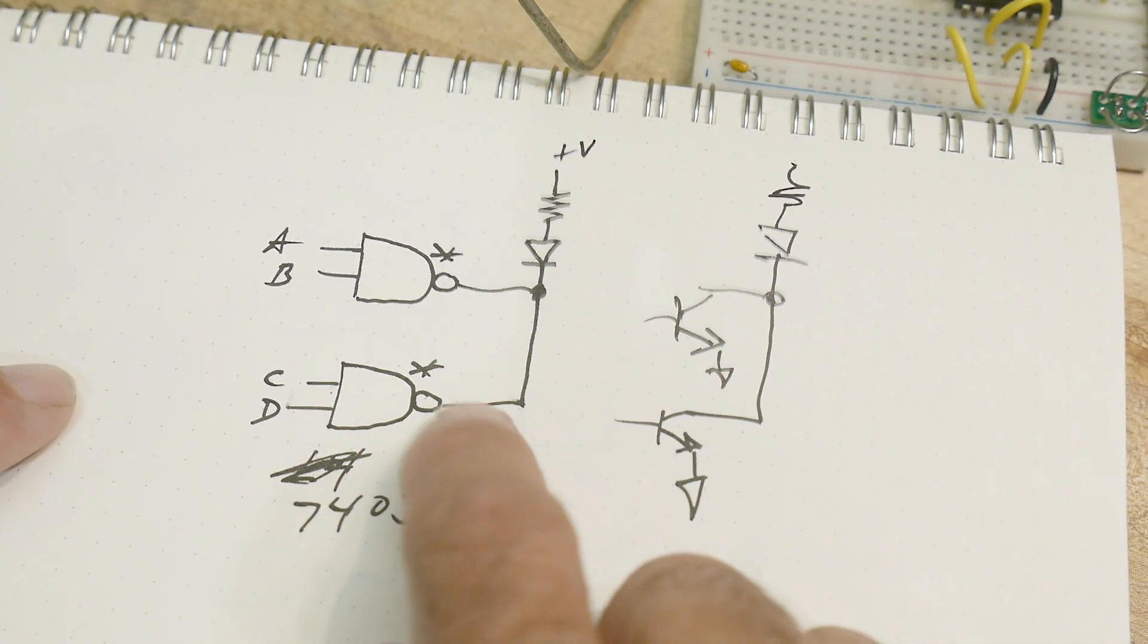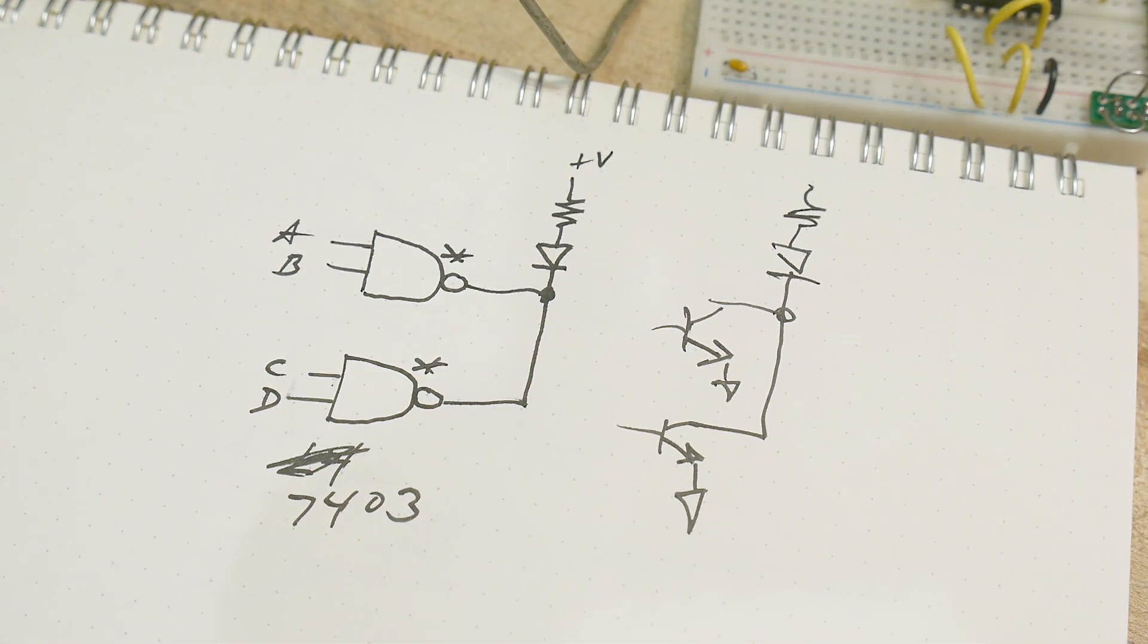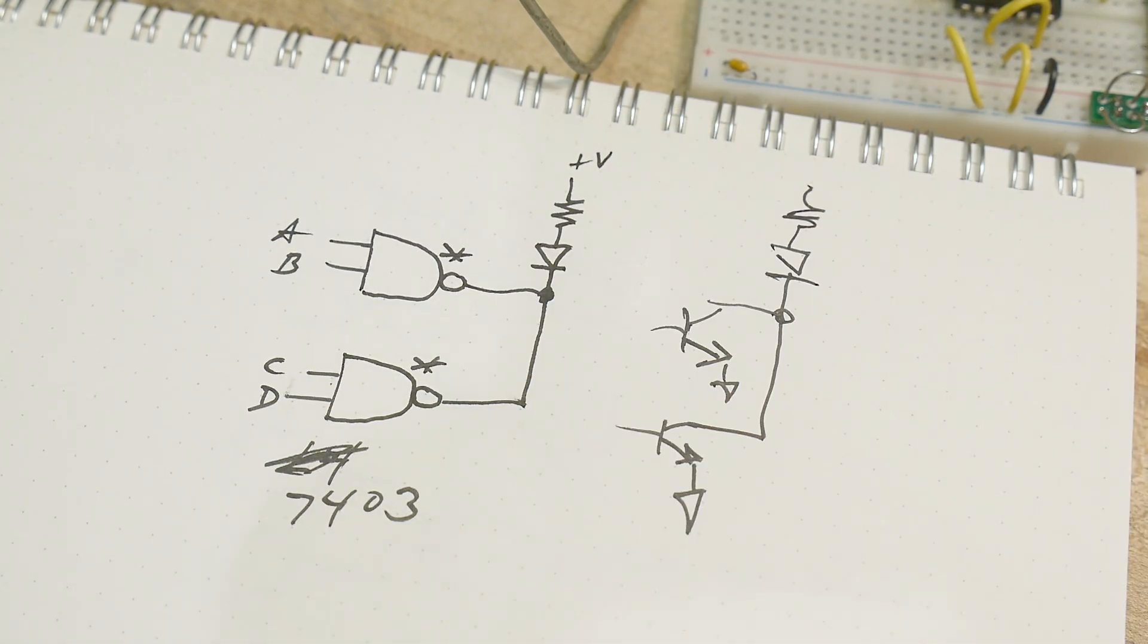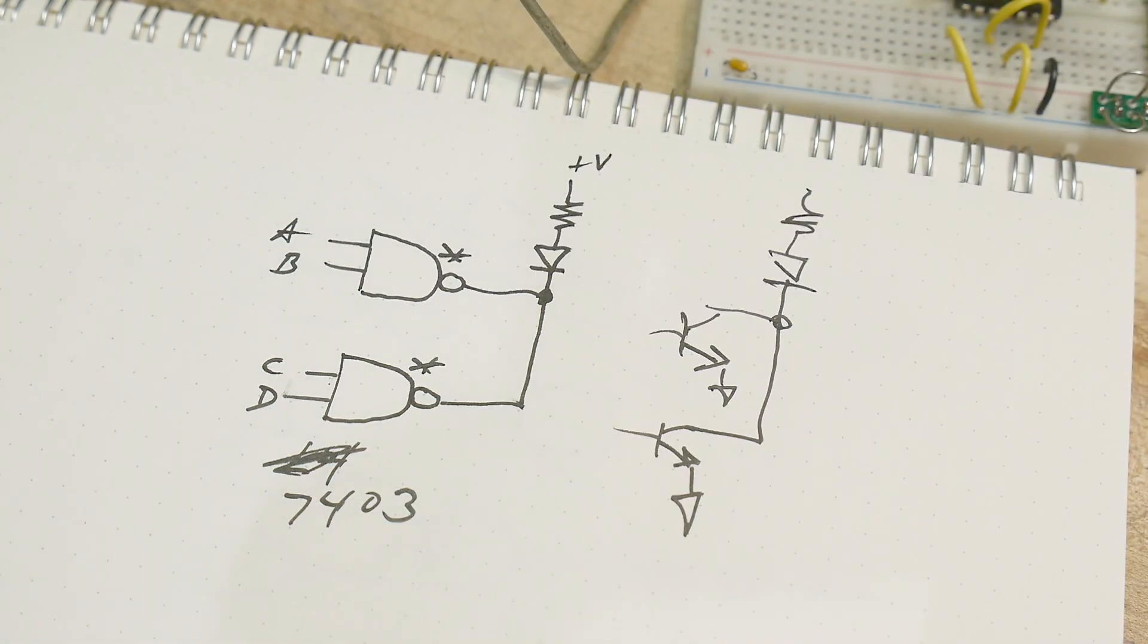So we've just done this circuit right here. And so that's how you would use these open collectors. You would use them as OR gates without having to actually use any electronics. It would just happen magically.